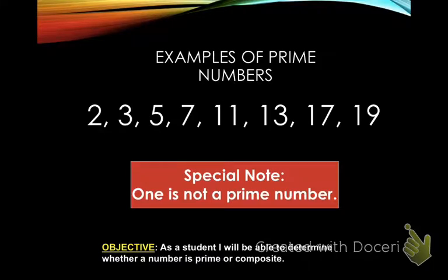What about the number one? Well, the number one only has one factor — one. That means it's not a prime number, because when it's one times one, remember we only wrote one six down when it was six times six? It's the same thing — the factors have to be two different numbers. So the number one is not prime. The first prime number is two.